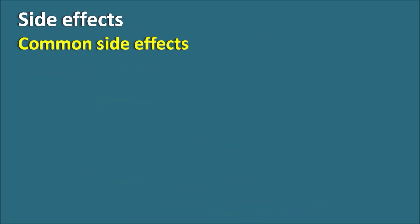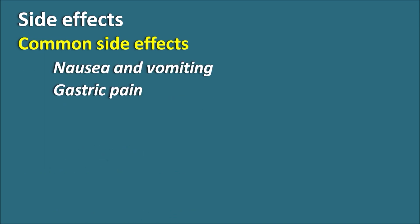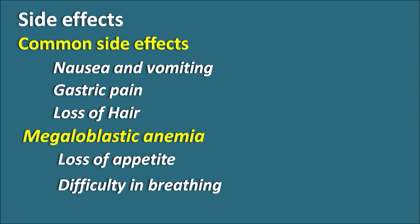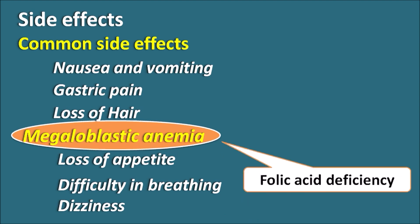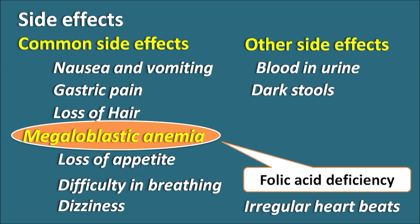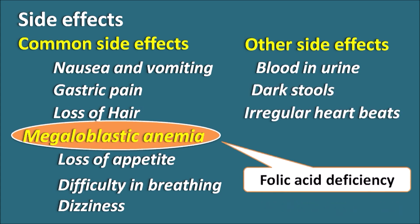Common side effects of methotrexate include nausea and vomiting, gastric pain, and loss of hair. It also produces megaloblastic anemia due to folic acid deficiency, with symptoms including loss of appetite, difficulty in breathing, and dizziness. Other side effects include blood in the urine, dark stools, and irregular heartbeats, with blood loss in urine observable at high doses.